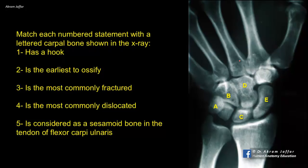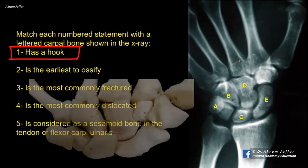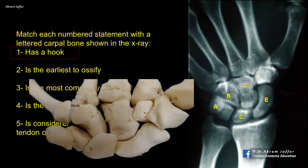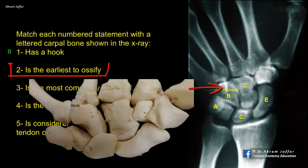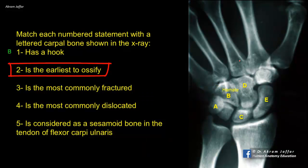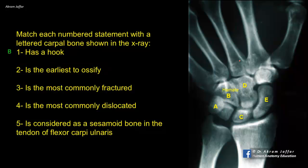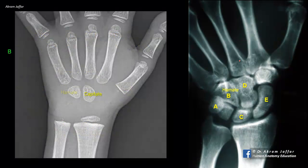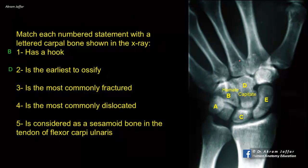Match each numbered statement with a lettered carpal bone shown in the X-ray. A hook is a characteristic feature of the hamate, the most medial of the second row of carpal bones — that is B. Two is the earliest to ossify. Carpal bones start ossification after birth in a sequence governed by their size, in which the largest is the first to ossify and the smallest is the last. The largest carpal bone is the capitate, which is D, and it is the first bone to be ossified.